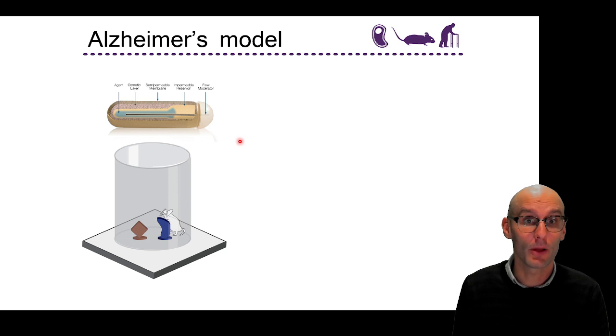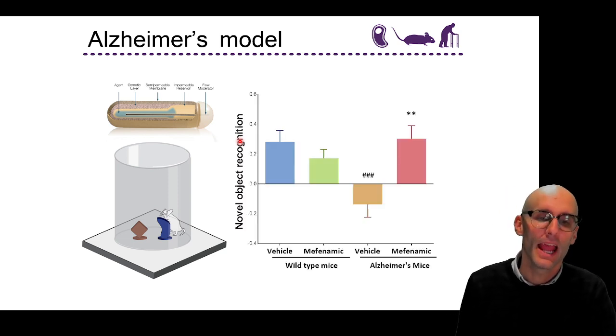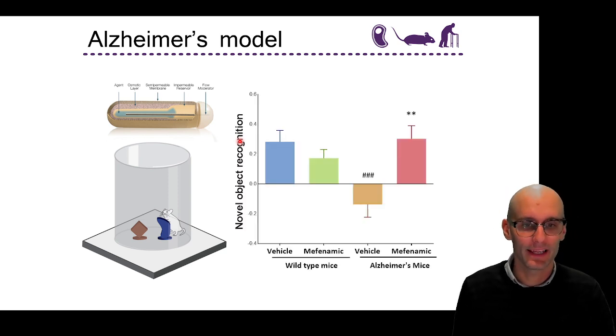And we used the novel object task. We also did the Y-maze task as well. And we basically found that, here we go, we've got our wild type mice. They could distinguish between the novel object and the familial object, the object, the familiar object, the object that they've seen before. Here's our Alzheimer's mouse. Terrible performance. Can't recognize between the old object and the new object.